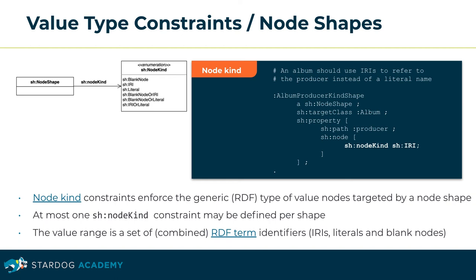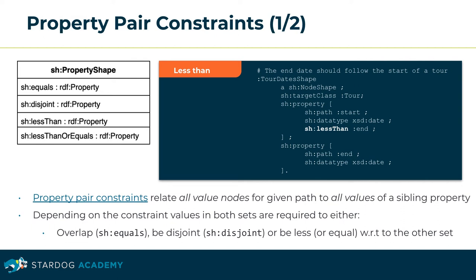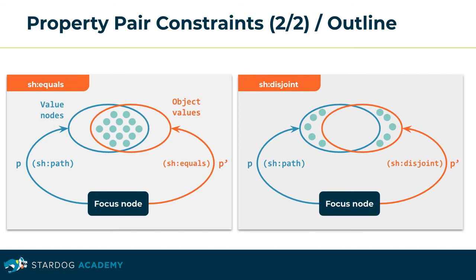Property pair constraints relate value nodes for a given path to values of a sibling property of the same target node. Depending on the constraint, values in both sets are either required to overlap for constraint 'equals', be different for constraint 'disjoint', or be less pairwise comparing both sets for the 'lessThan' constraint. In the example, the start dates are required to precede the end dates of a tour. The set of value nodes must be identical to the set of object values of the predicate specified by the 'equals' constraint. Any missing or redundant values will be reported. On the contrary, the 'disjoint' constraint will report any values both sets have in common, as the sets are expected to differ.